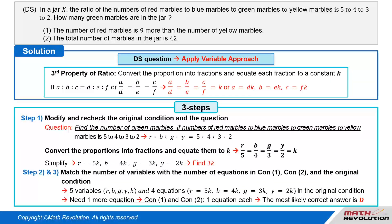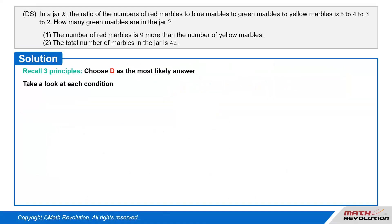Following the second and third steps: from the original condition we have five variables — R, B, G, Y, K — and four equations: R = 5K, B = 4K, G = 3K, Y = 2K. To match the number of variables with the number of equations, we need one more equation. Since conditions 1 and 2 will each provide one equation, it's about 60% likely that D will be the answer. Recall the three principles and choose D as the most likely answer.